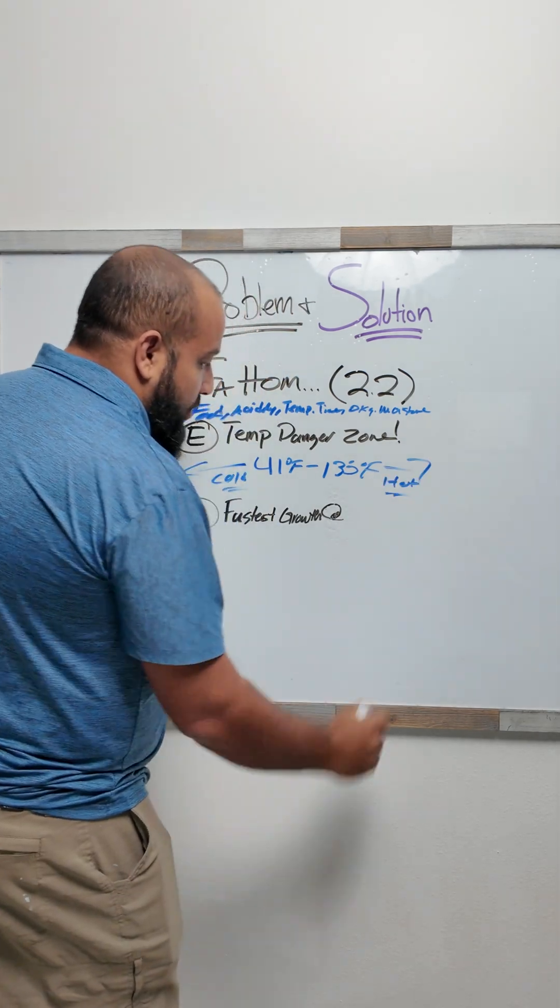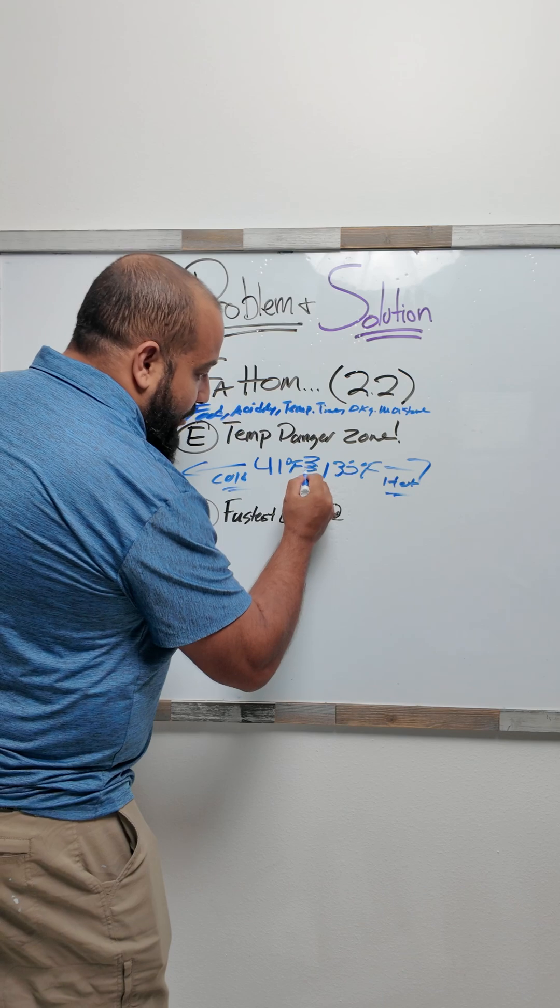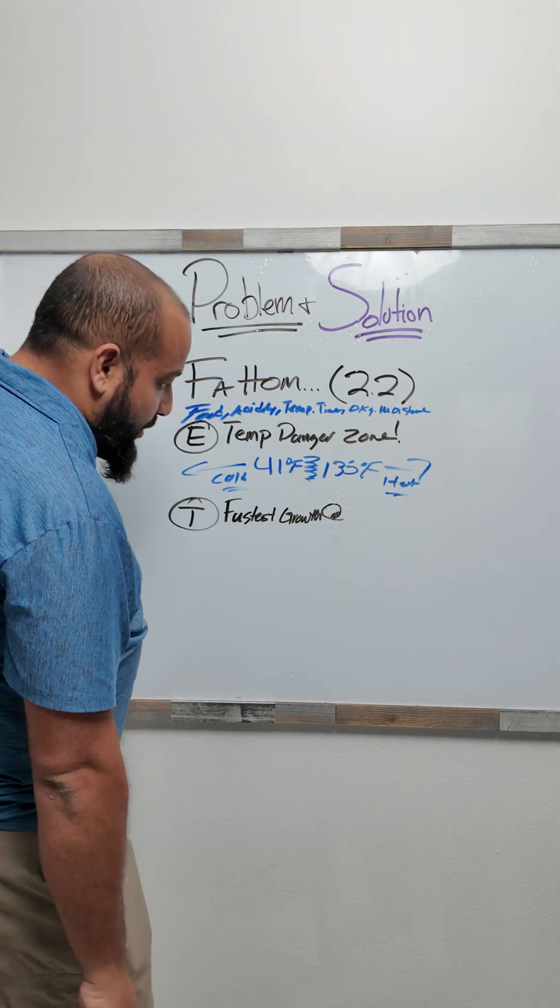41 degrees Fahrenheit to 135 degrees Fahrenheit. We keep hot food hot, cold food cold, nothing ever in between. That's where bacteria grows.